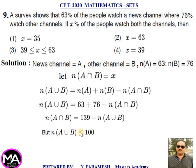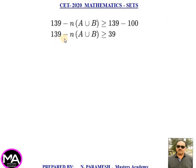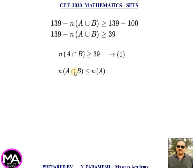Since N(A ∪ B) ≤ 100, introducing minus on both sides: −N(A ∪ B) ≥ −100. Adding 139 on both sides: 139 − N(A ∪ B) ≥ 39. Call this equation 1. Also, N(A ∩ B) ≤ N(A), i.e., N(A ∩ B) ≤ 63. Call this equation 2.